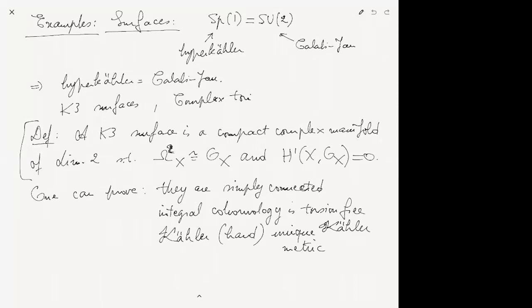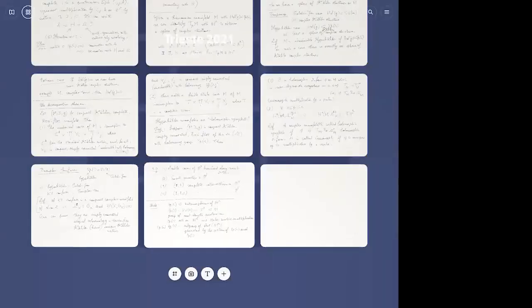K3 surfaces have unique Kähler metrics. For complex tori — which you know from Angela's lectures — it's C² modulo a lattice. They are not simply connected, but they are hyperkähler: they have a hyperkähler structure and Ω² is also trivial.